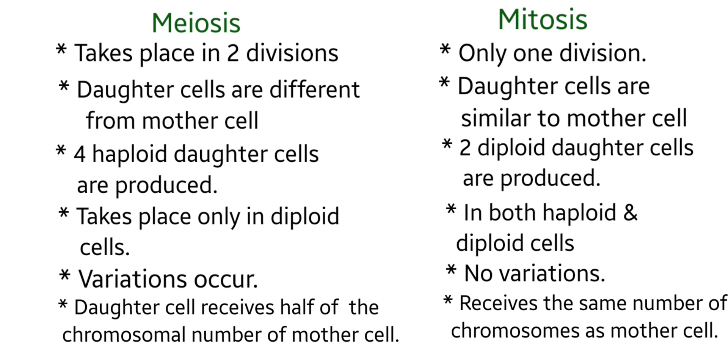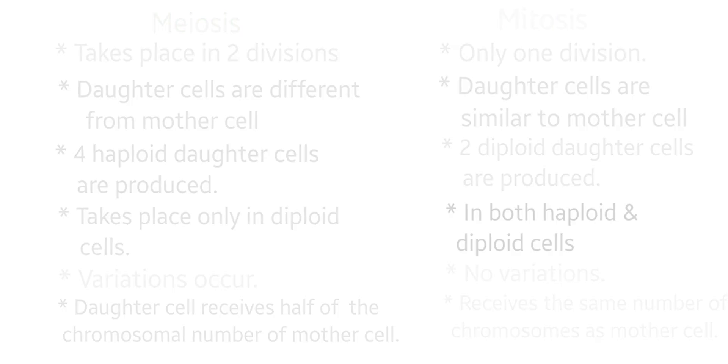In meiosis, daughter cells receive half of the chromosomal number of mother cell. In mitosis, two daughter cells receive the same chromosomal number as the mother cell.